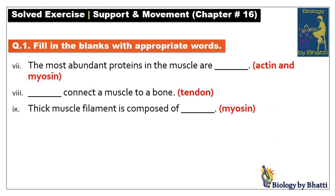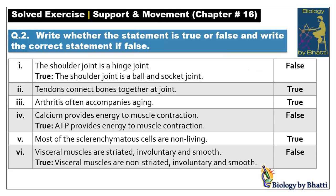Number seven: the most abundant proteins in the muscle are — note the plural 'proteins.' The answer is two proteins: actin and myosin. Number eight: dash connects muscle to a bone. The answer is tendon, a connective tissue which connects muscles to bone at a joint.